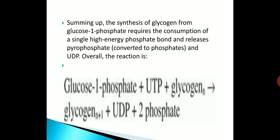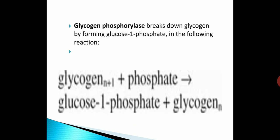Summing up, the synthesis of glycogen from glucose 1-phosphate requires the consumption of a single high-energy phosphate bond and releases pyrophosphate that is converted to phosphates and UDP. Overall, the reaction is: glucose 1-phosphate + UDP + glycogen → glycogen-UDP + 2 phosphate.